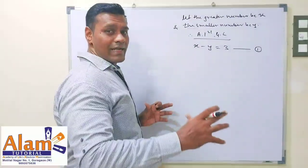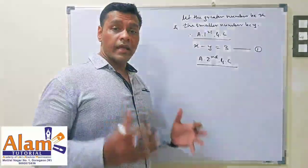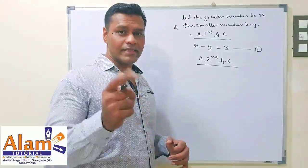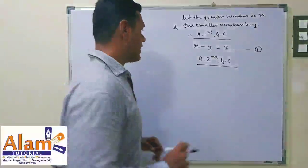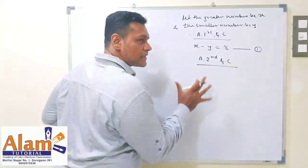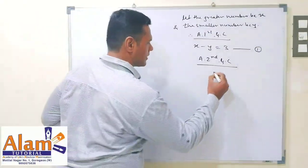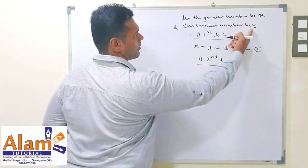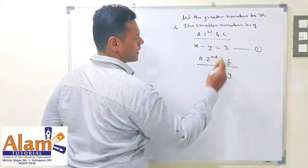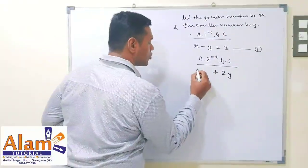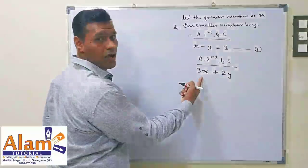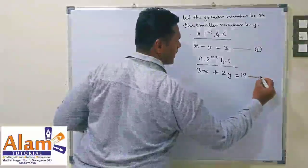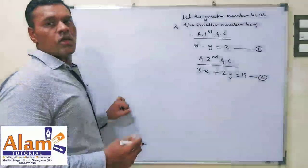Now what is the second condition? The sum of twice the smaller number and thrice the greater number is 19. Twice the smaller number y gives 2y. Thrice the greater number x gives 3x. So 3x plus 2y is equal to 19. This is your equation 2.